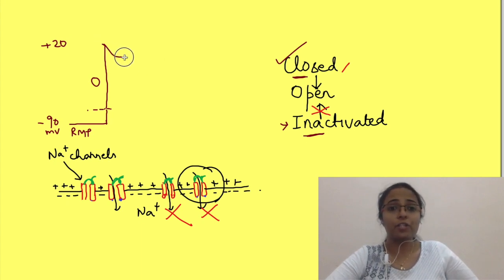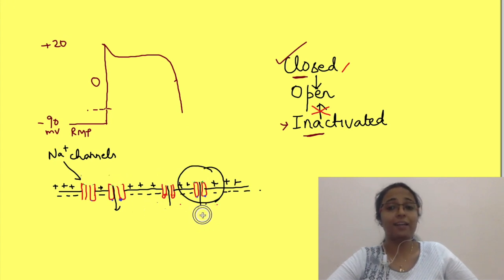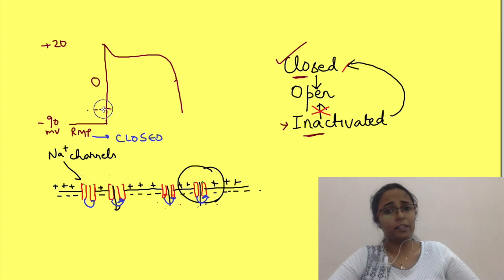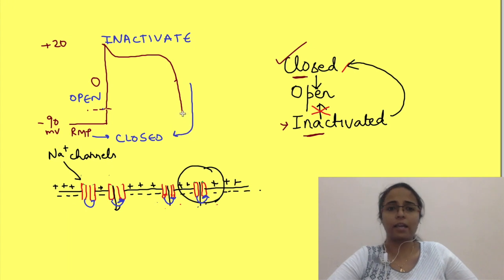Now, when the potential starts moving back to resting membrane potential, that is as repolarization occurs, these channels again change their structure such that they are now in closed state. In summary, at RMP, sodium channels are closed. At threshold, they open and then inactivate very fast, and with repolarization, they again close.